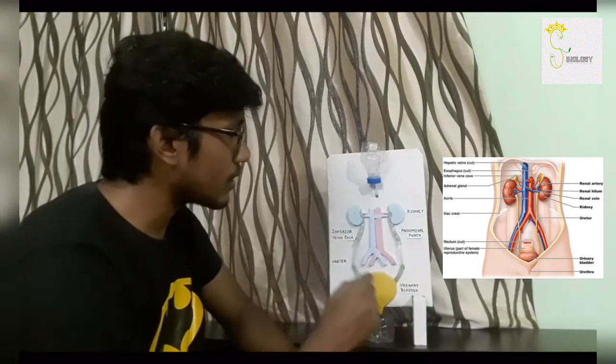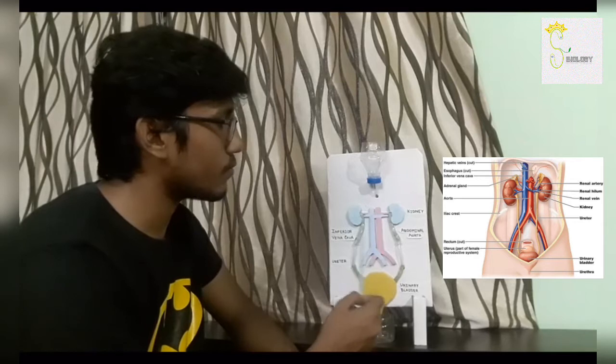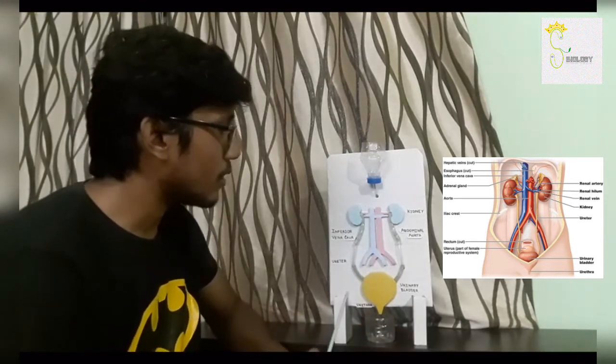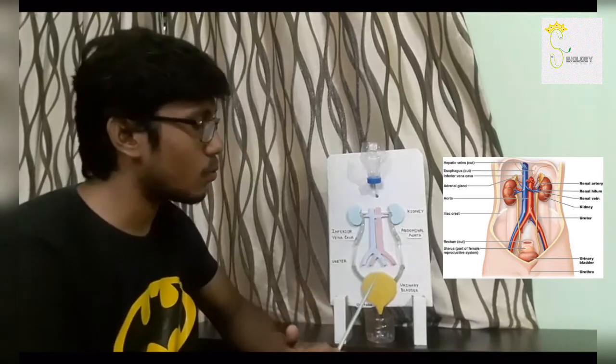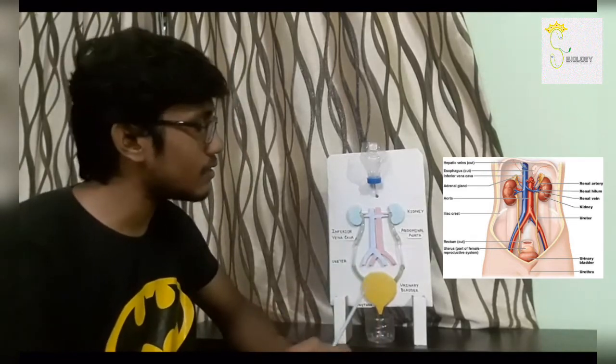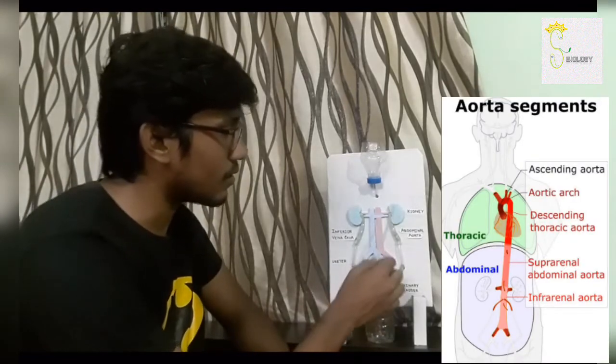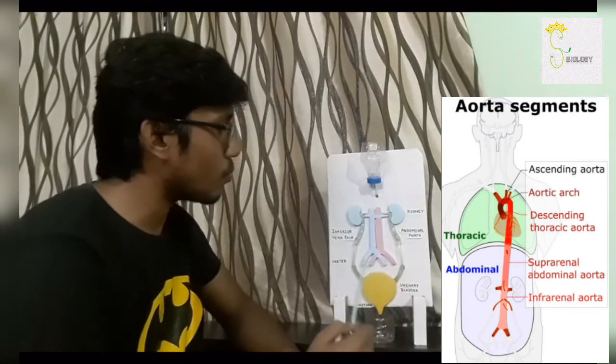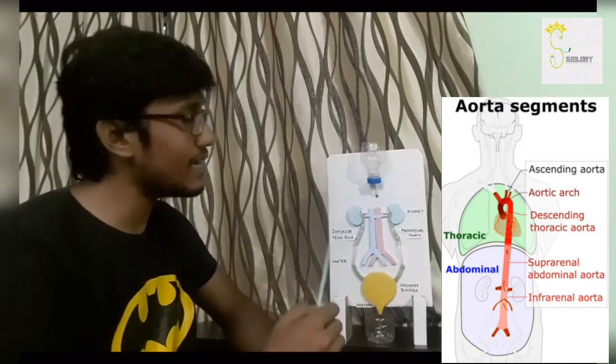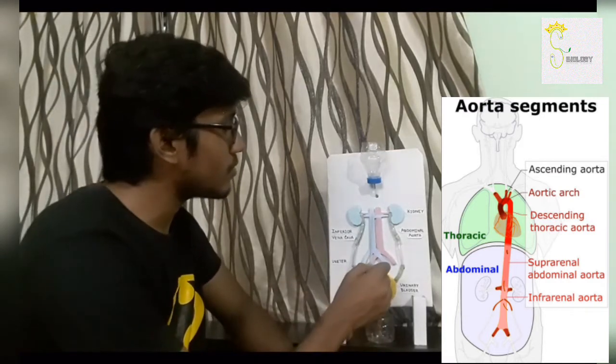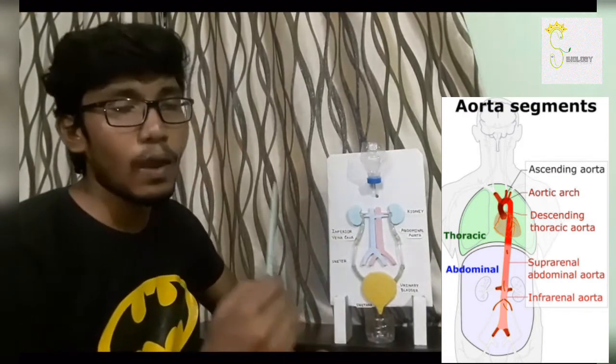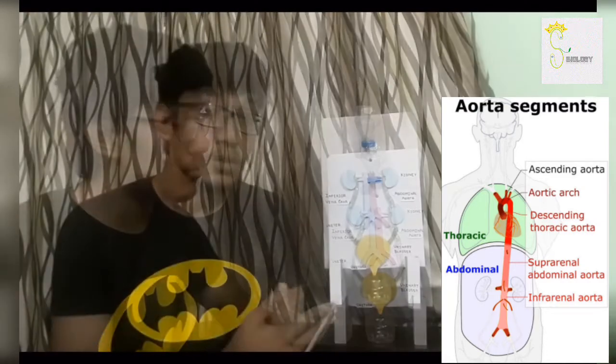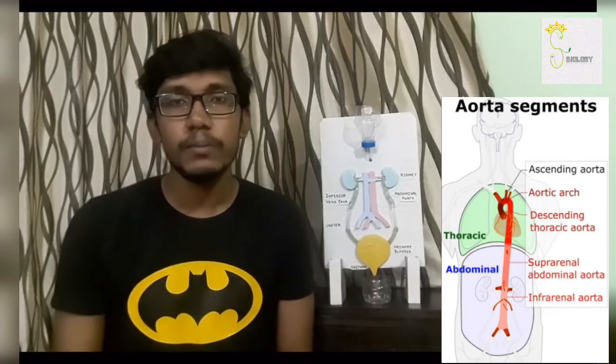The kidney function is to collect the body waste and produce urine. Every minute 1300 ml of blood enters the kidney and 1299 ml leaves the kidney and only 1 ml urine is produced.